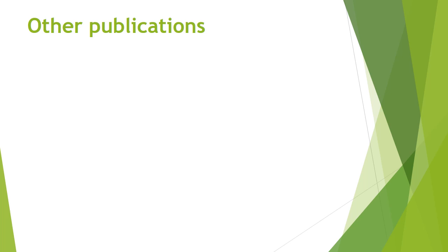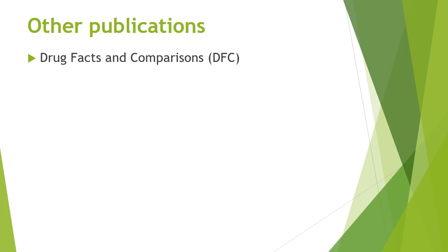Drug Facts and Comparisons, known as DFC, is also available as a computer software program. It is an encyclopedia of medications that contains many facts about product groups and individual products and makes comparisons among them. It contains complete dispensing and prescribing information, interactions, allergies, warnings, indications for use, and side effects. It also lists whether products are prescription or non-prescription medications. If a medication is a controlled substance, Drug Facts and Comparisons will indicate its schedule. It also contains relative price comparisons for drug products.